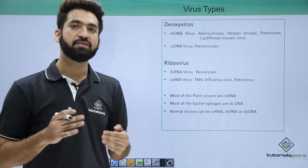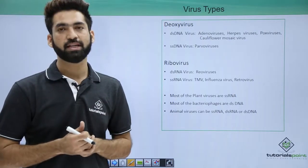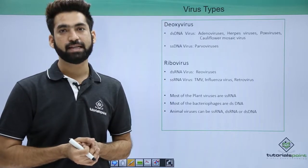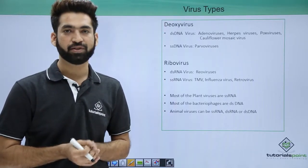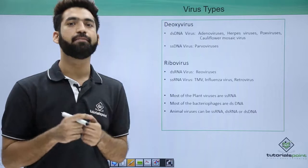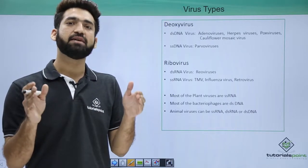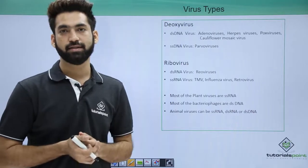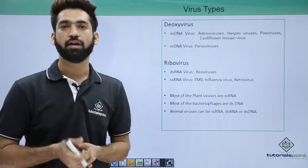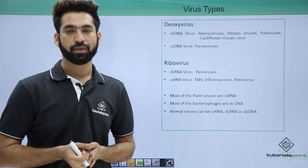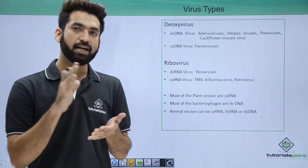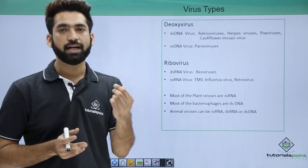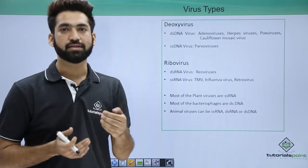What happens in our body is that DNA is the genetic material. DNA is the genetic material in most organisms, except in a few viruses where RNA will be the genetic material. So both RNA and DNA can be the genetic material of viruses. If RNA is the genetic material, the viruses are called riboviruses.